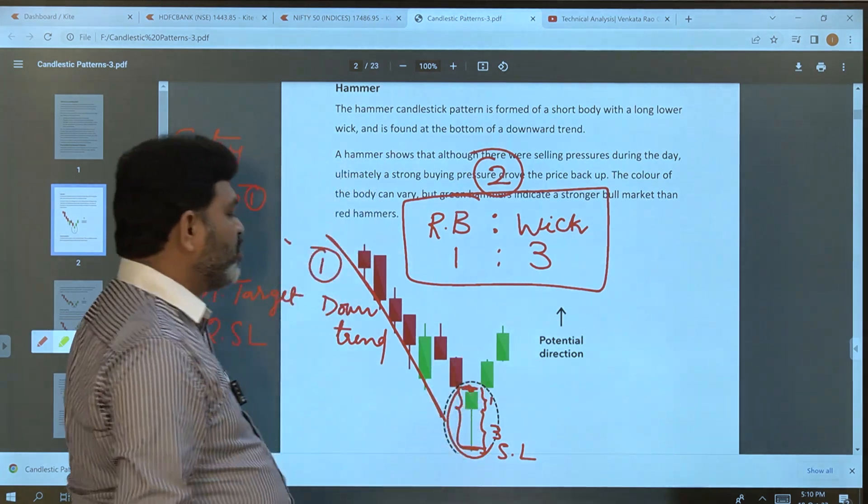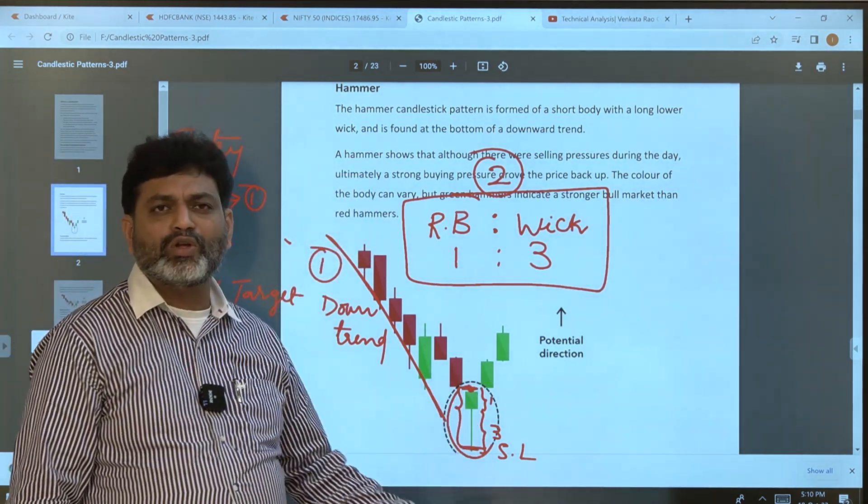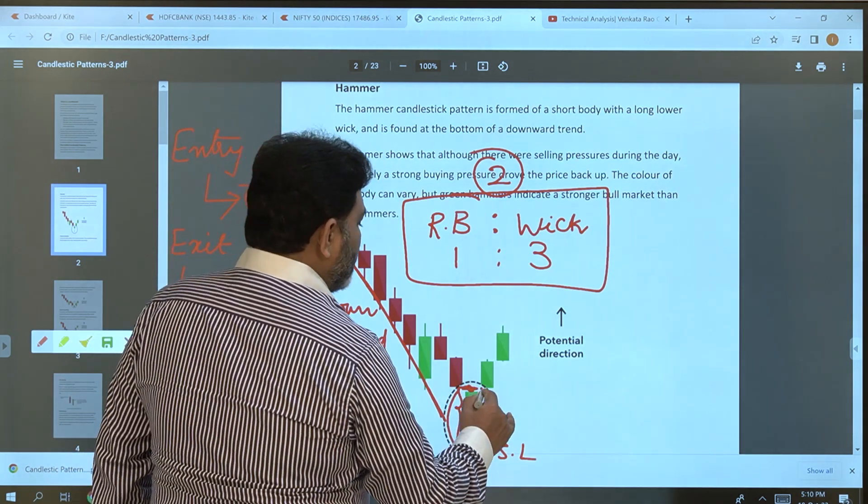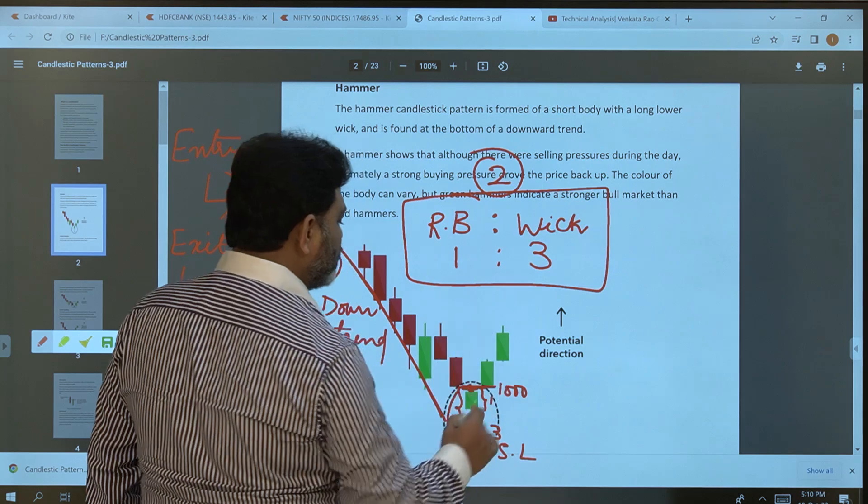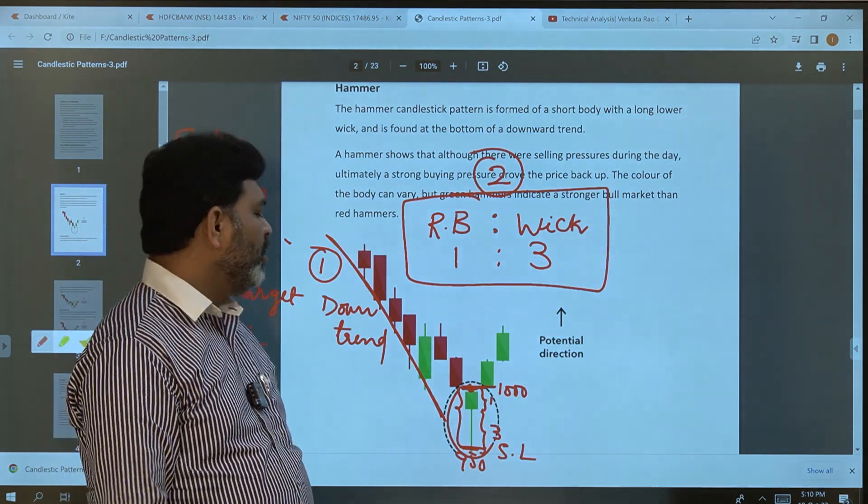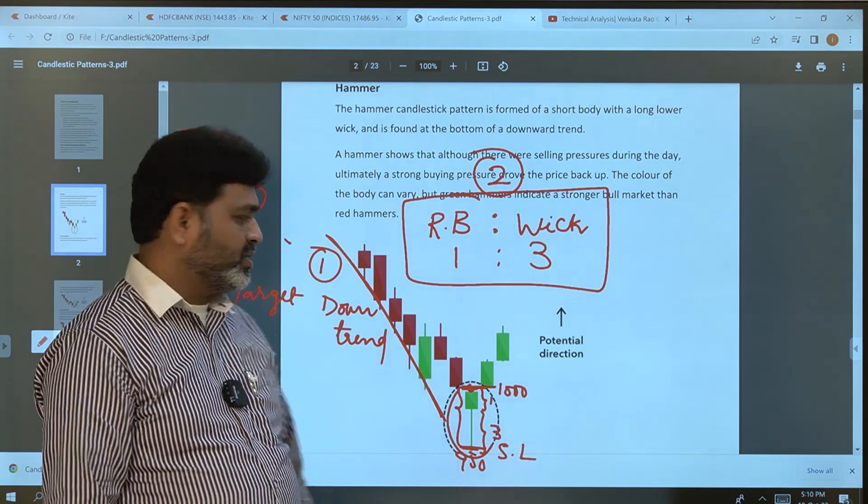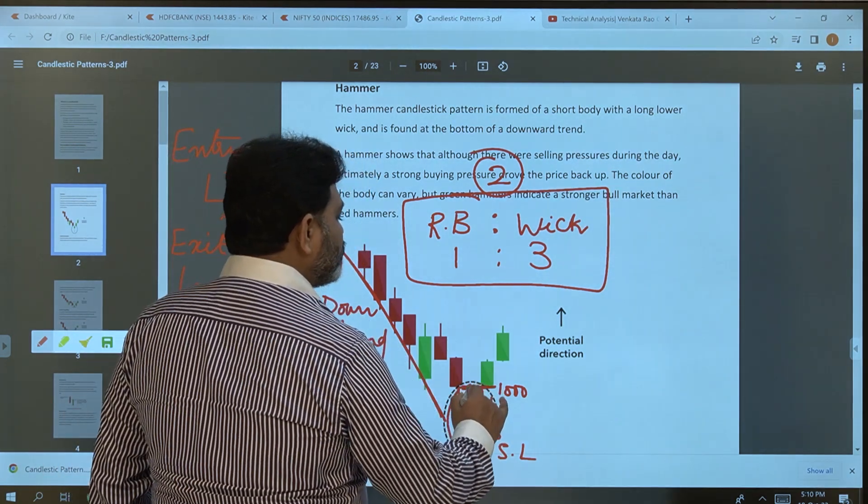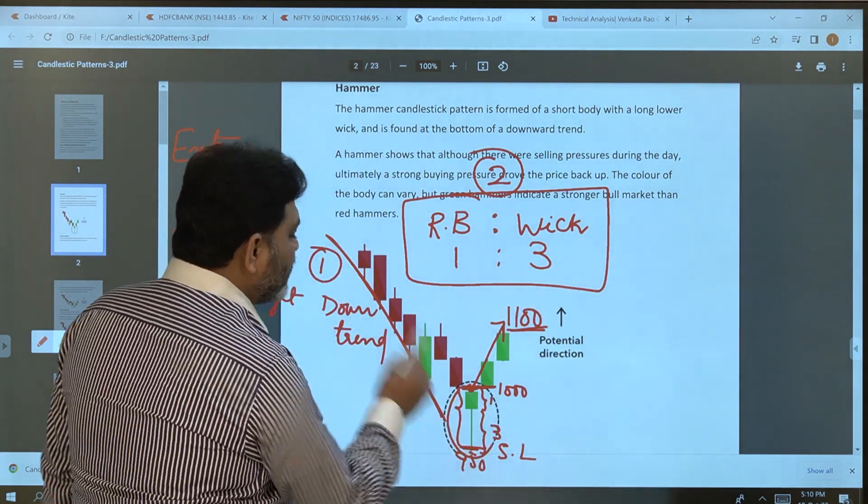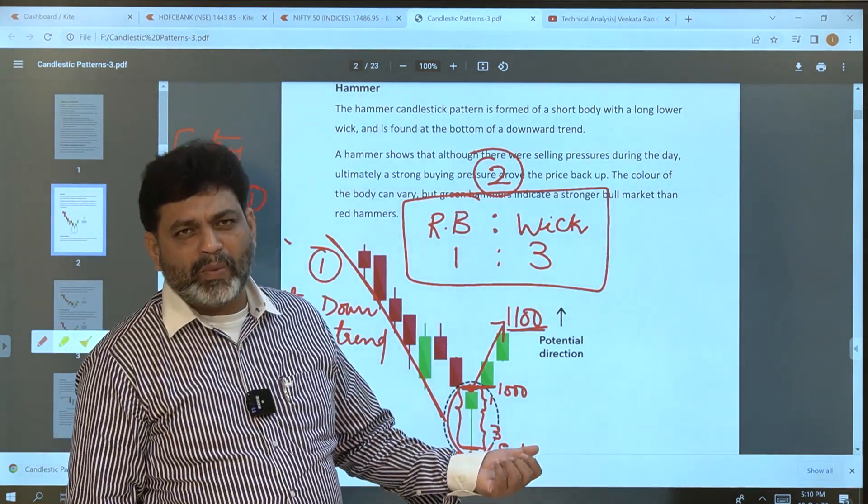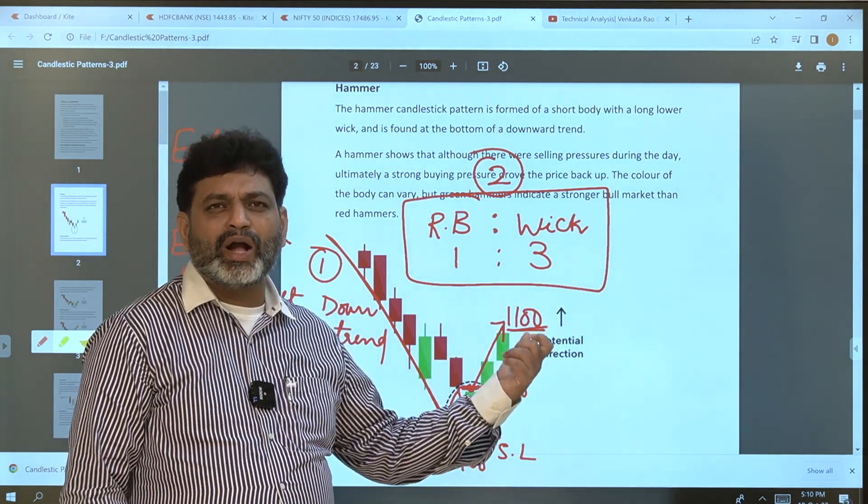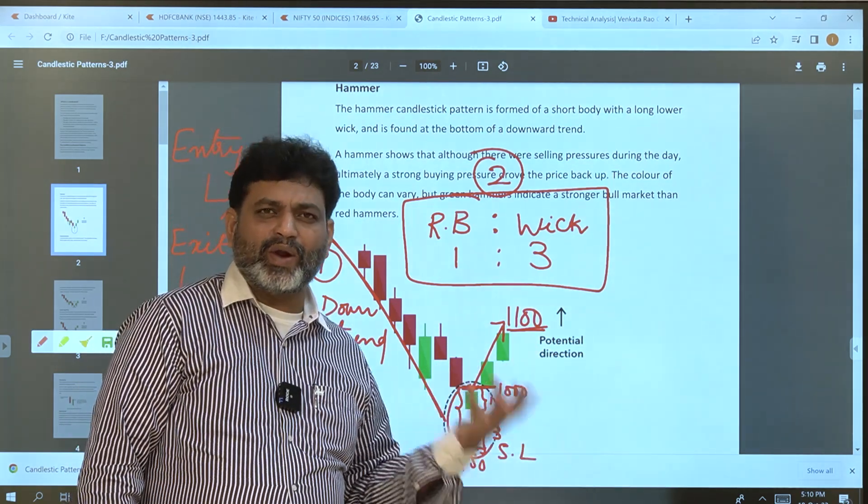The length between the high and low, this three times length - we can set a target at two times of this candle range. Suppose here is one thousand and the low is 950, the difference between these is 50 points. If we take entry here at one thousand, we can set the target at 1100 - two times the candle range. The candle range is 50 points, so two times we can set, or if you don't want to take much risk, one time you can set.